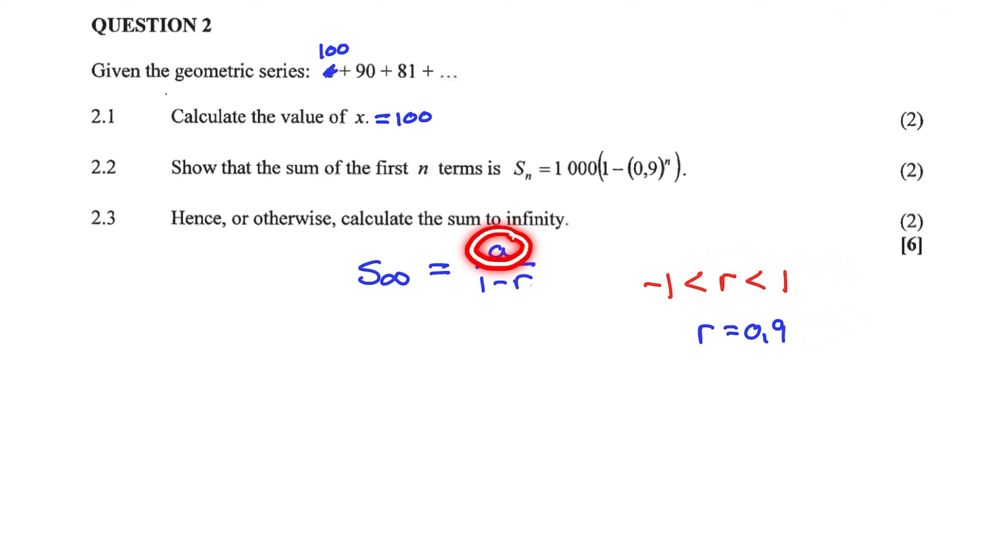We also have the value of A as equal to 100. So if I simply substitute, I have 100 over 1 minus 0.9. And that is equal to 1000.